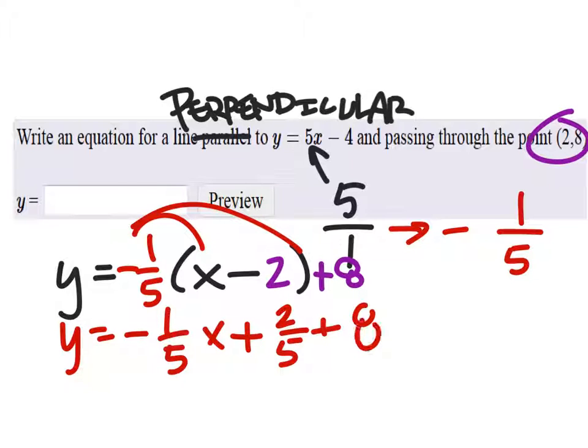2 fifths plus 8. I need common denominators before I can add those, unless you made it a mixed number.